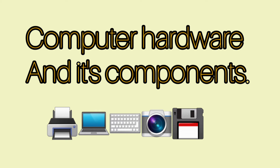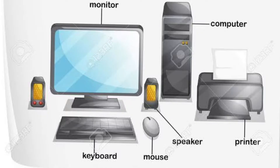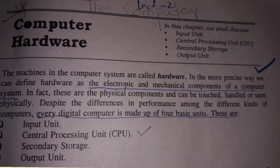Basically, computer hardware are those parts of a computer which are seen and which can be touched. All the physical components of a computer are called computer hardware. The machines in the computer system are called hardware. More precisely, hardware is defined as the electronic and mechanical components of a computer system — physical components that can be touched, handled, or seen physically.